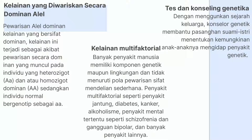Yang terakhir yaitu tes dan konseling genetika. Dengan menggunakan sejarah keluarga, konselor genetik membantu pasangan suami istri menentukan kemungkinan anak-anaknya mengidap penyakit genetika. Amniosentesis dan pengambilan sampel vilus korionik dapat mengindikasikan adanya suatu kelainan genetik yang dicurigai pada janin. Tes-tes genetik lain dapat dilakukan setelah persalinan. Pendekatan preventif terhadap kelainan Mendelian dilakukan sewaktu risiko penyakit genetik dapat dikaji sebelum kehamilan atau pada tahap-tahap kehamilan.